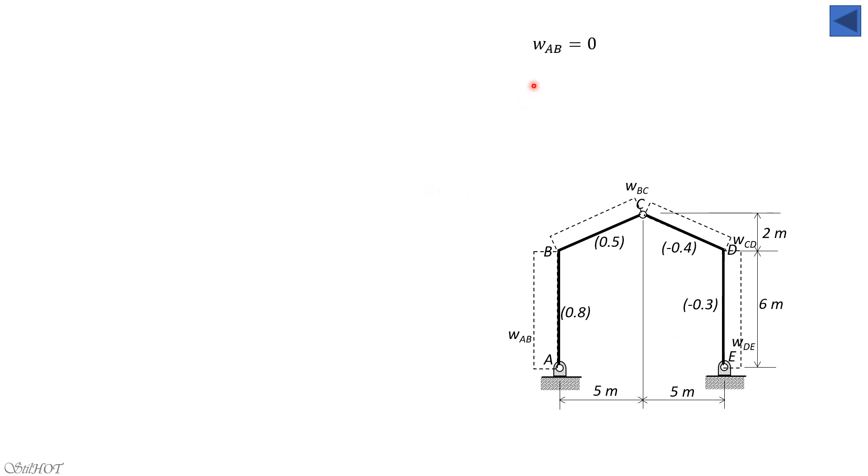For the values, we have W_AB equals 0.8 with pressure coefficient, the pressure 1.9, and times 6 (6 is the width perpendicular to the board), so that's 9.12 kilonewtons per meter. For DC it's 0.5 times 1.9 times 6, so 5.7 kilonewtons per meter. For CD, this is suction: 0.4 times 1.9 times 6 equals 4.56. Then finally for DE, 0.3 times 1.9 times 6 equals 3.42 kilonewtons per meter.